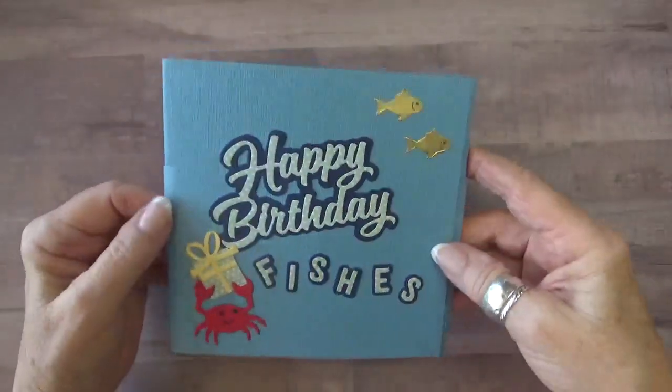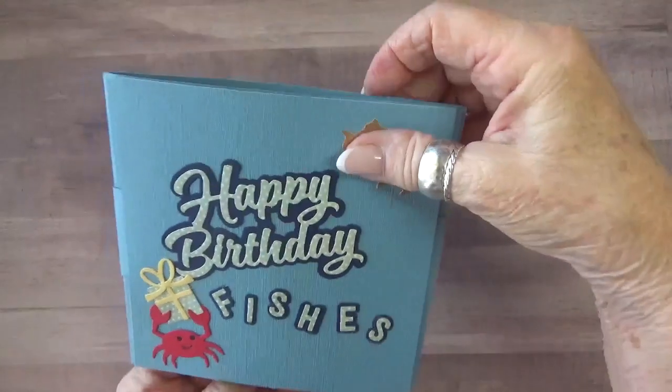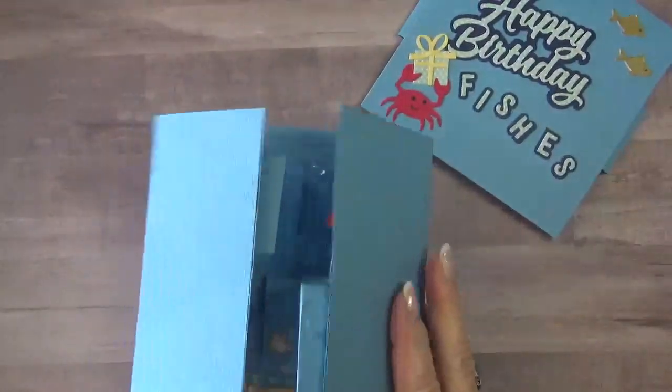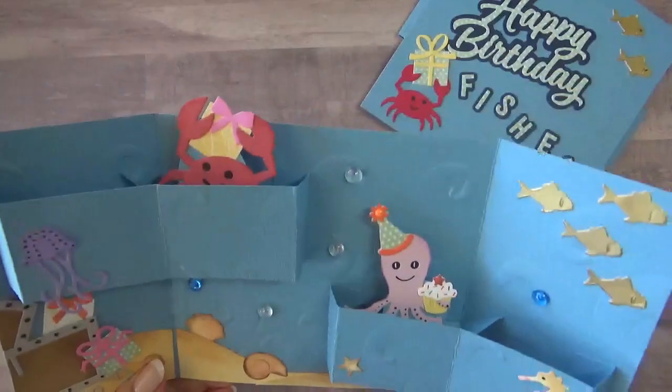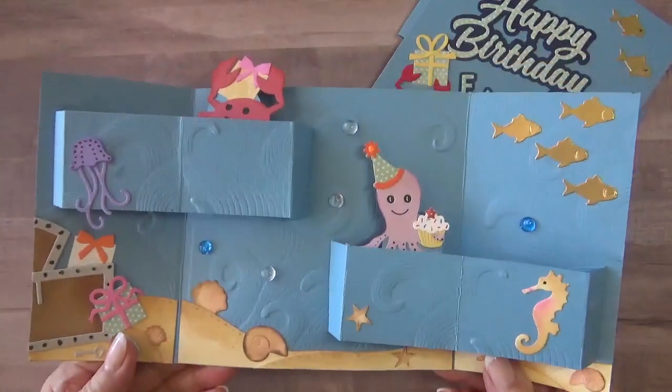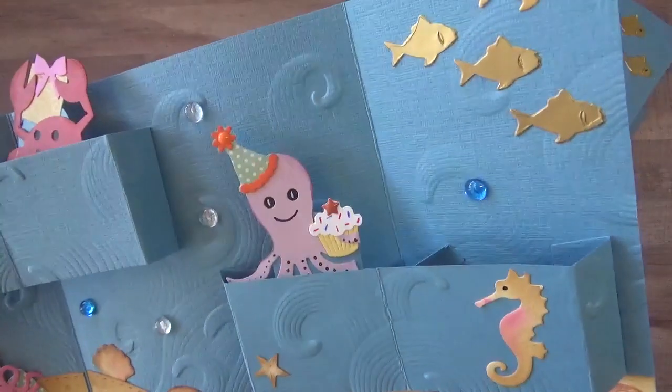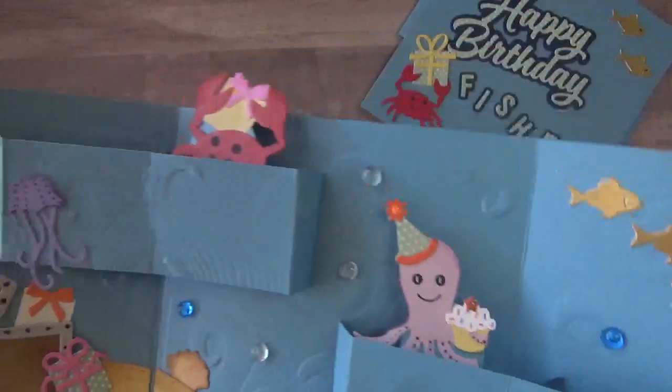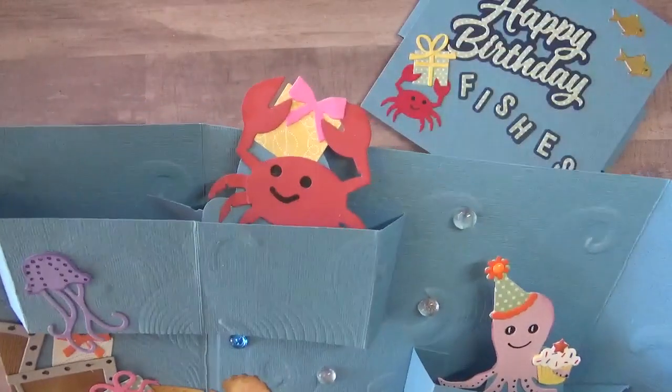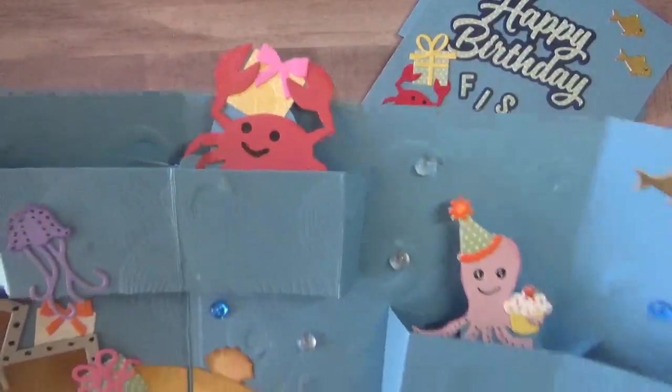It's just a little bit shorter on each side. The belly band pulls off to reveal a gatefold underwater card. As you can see, I've added a cute little octopus with a cupcake and a little crab over here holding a birthday present.